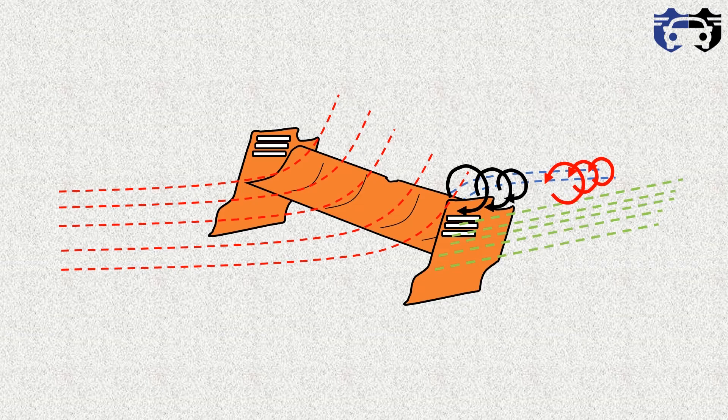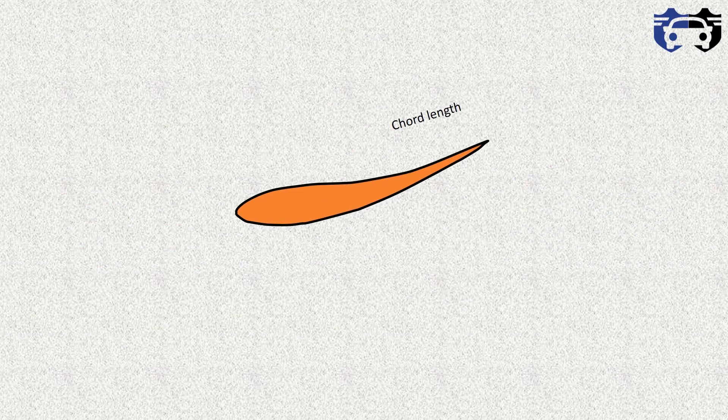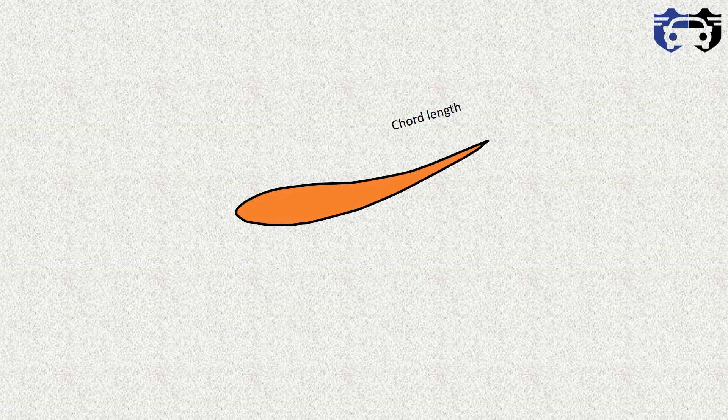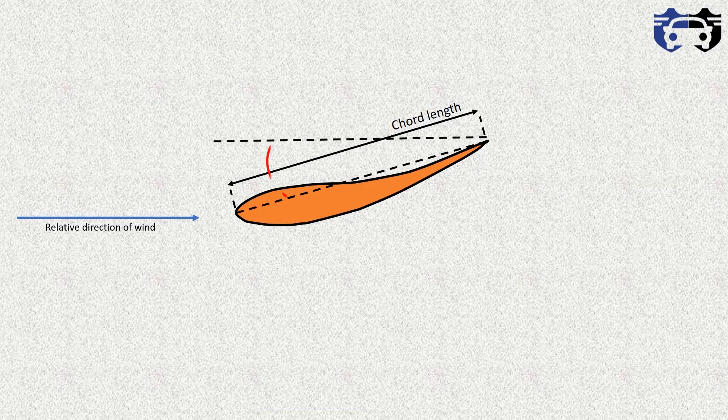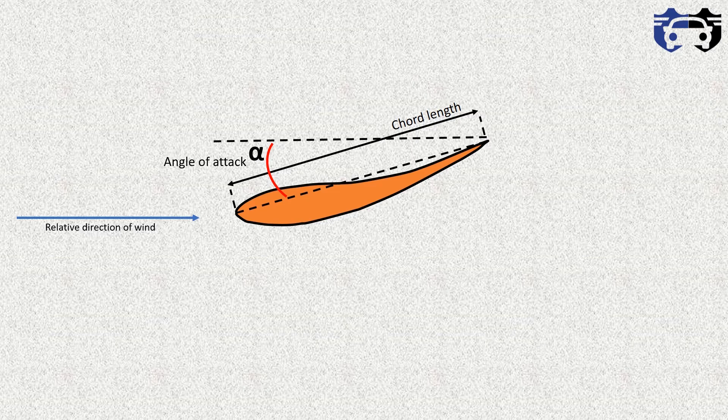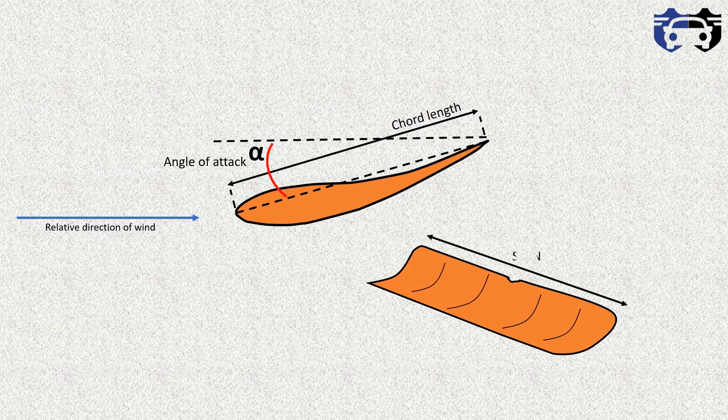Now let's understand what is angle of attack. This is your wing side view. The distance between the leading and the trailing edge is called the chord length. The relative velocity of the air is in this direction. The angle made by the direction of the relative velocity and the chord length is called the angle of attack.